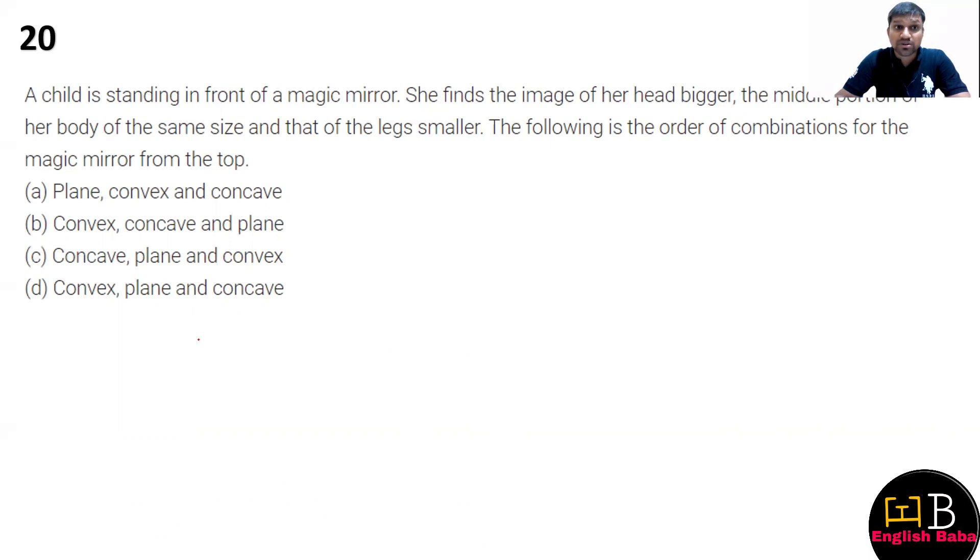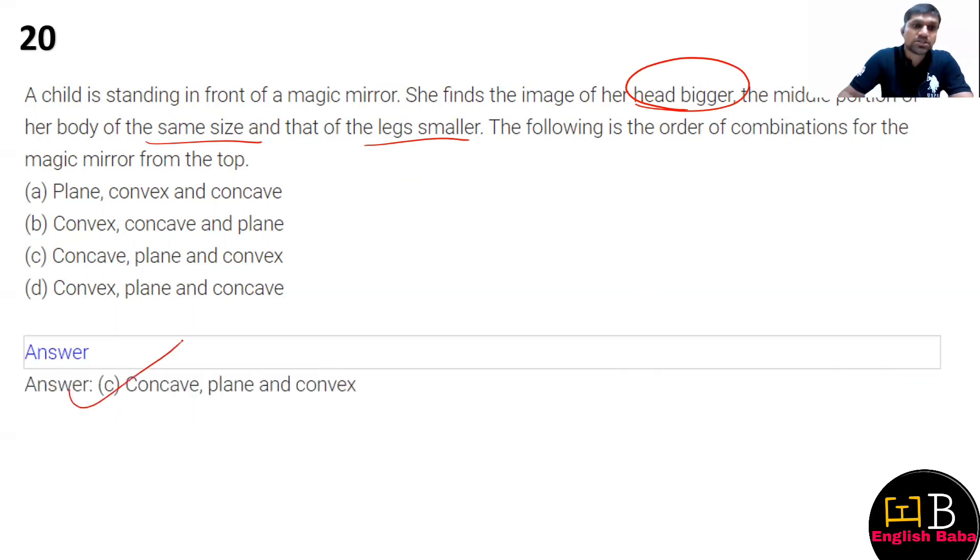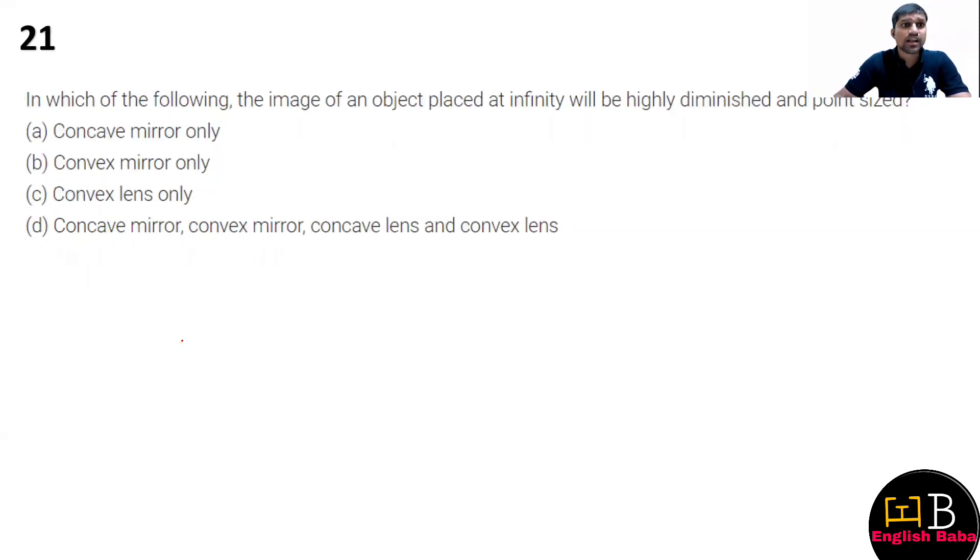Next question twenty: there is a child who is standing in front of the magic mirror, and they see that the head is bigger, middle portion is same size, and legs are smaller. You have to identify the mirrors. The correct option is option C. Where head size is bigger, that is concave; same size is plane; and next is convex mirror.